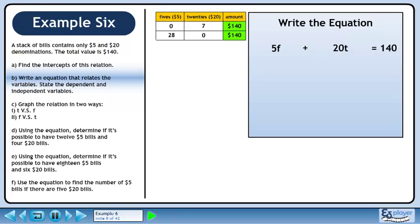The amount of money from the 20s is 20t, where 20 is the value of the bill and t is the quantity of bills. The equation that relates the variables is 5f plus 20t equals 140.